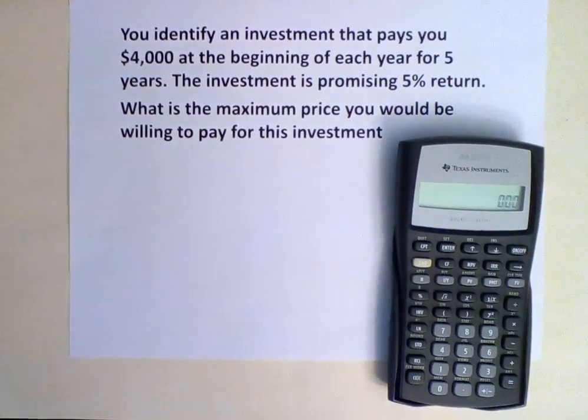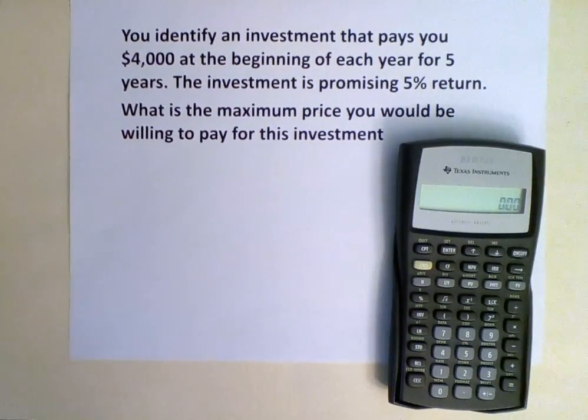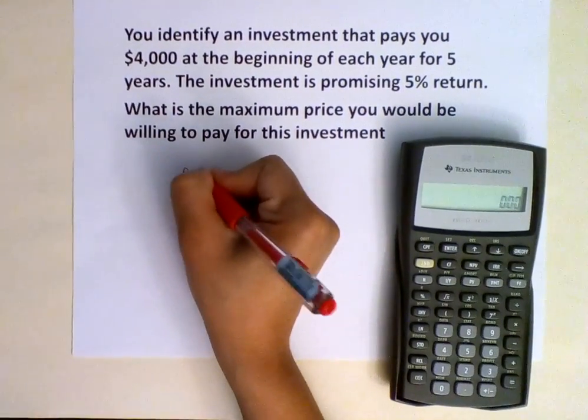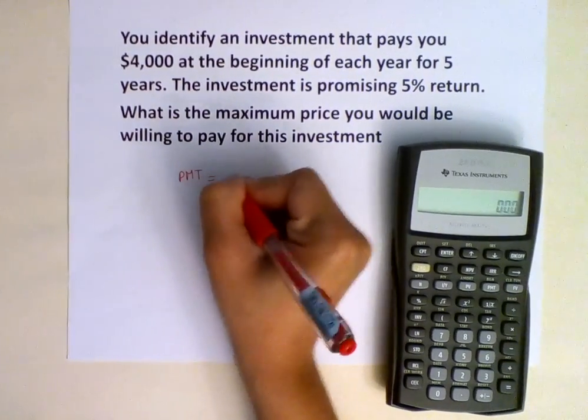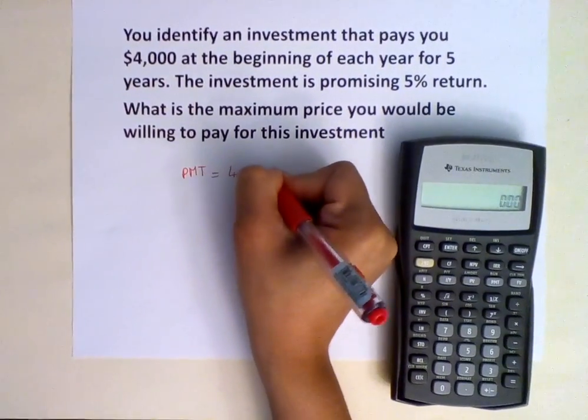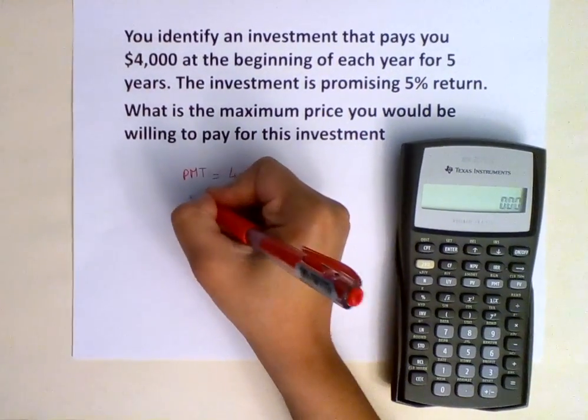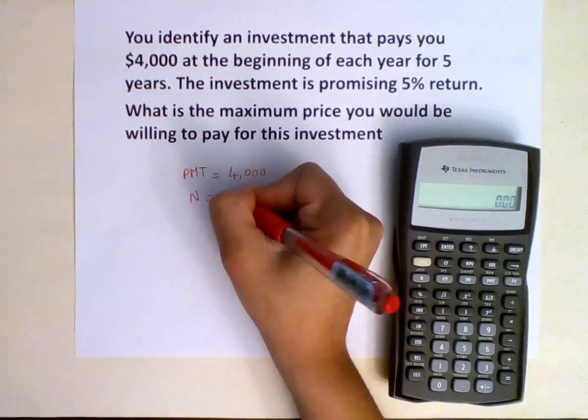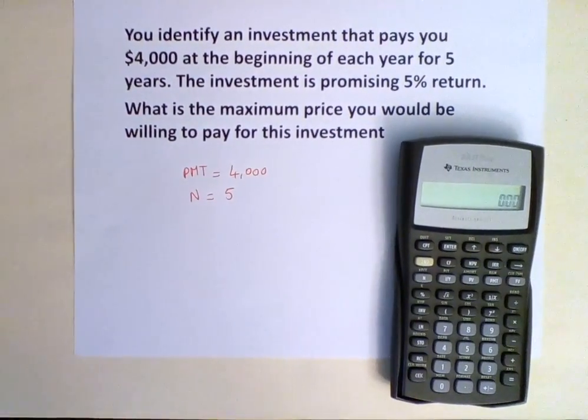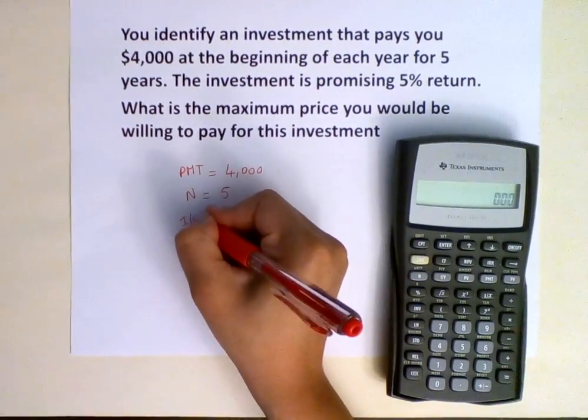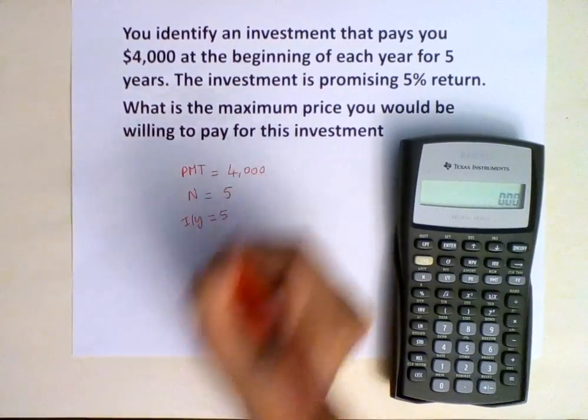In this investment, we get $4,000 at the beginning of each year, so PMT equals $4,000. We are investing for five years, so N equals five. And the investment is promising 5% return, so I over Y equals five.